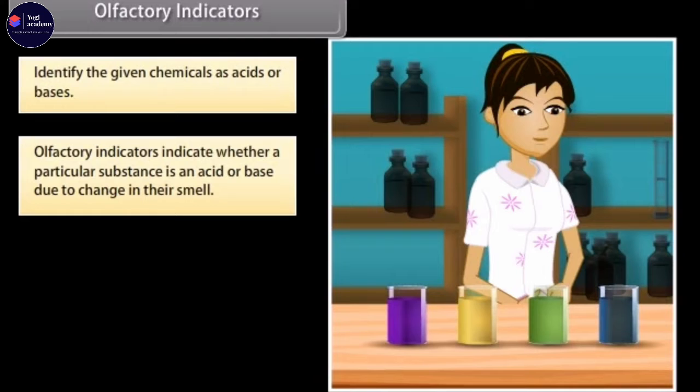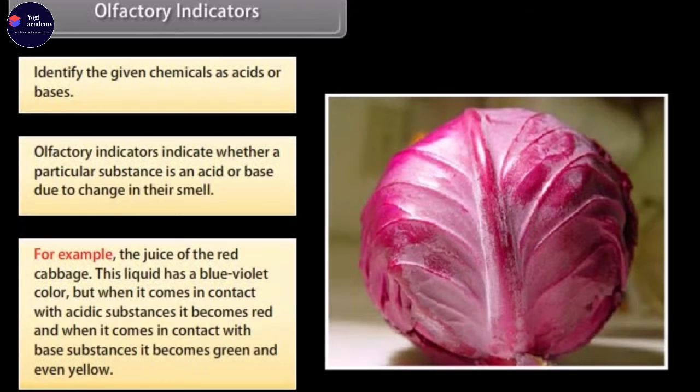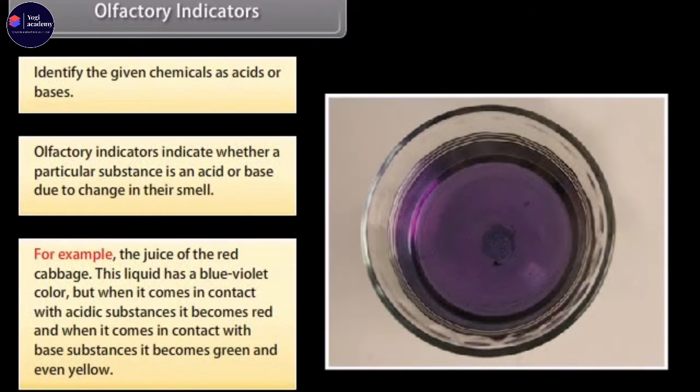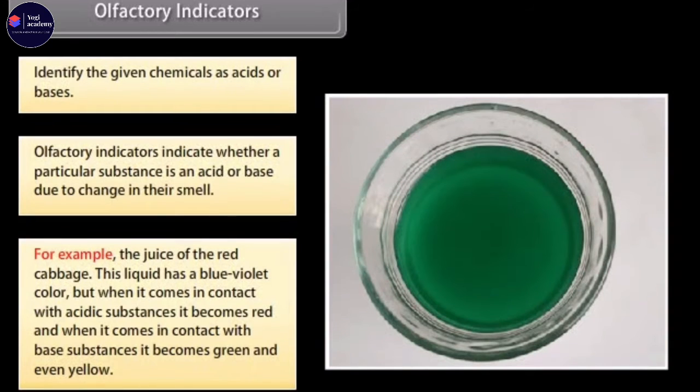An olfactory indicator works on the principle that when an acid or base is added to a substance, then its odor cannot be detected. For example, the juice of the red cabbage. This liquid has a blue-violet color, but when it comes in contact with acidic substances, it becomes red, and when it comes in contact with base substances, it becomes green and even yellow.